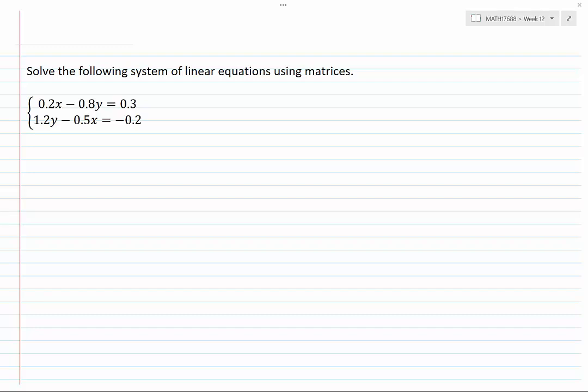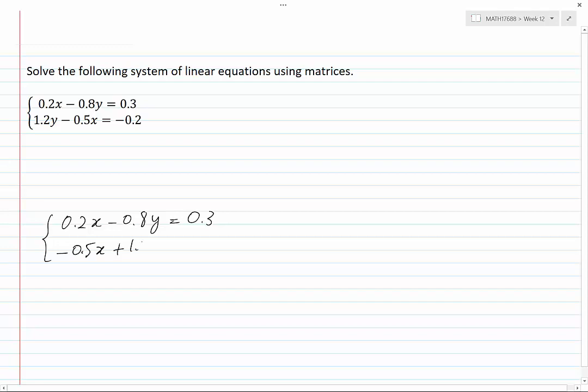Therefore I'll have 0.2x minus 0.8y equals 0.3, and minus 0.5x plus 1.2y equals minus 0.2.